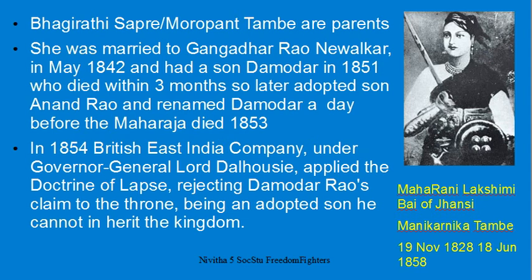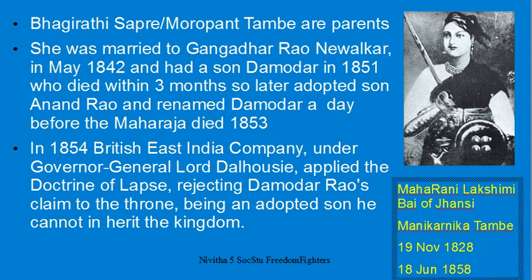Rani Lakshmi Bai, also called the Maharani of Jhansi, was born to Bhagirathi Sapre (her mother) and Moropant Tambe (her father). She was known as Manikarnika when she was born. She was married to Gangadhar Rao Newalkar and had a son, Damodar, in 1851. Rani of Jhansi was born in 1828 and died in 1858 — at just 30 years of age, she fought for Indian freedom.